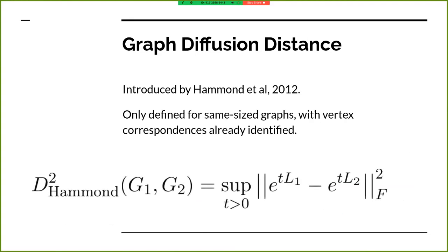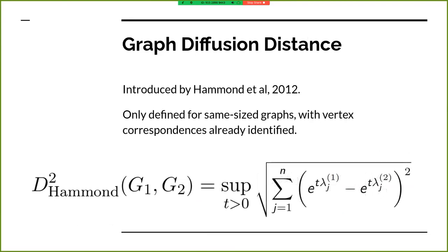GDD computes the distance between two graphs by looking at the maximum difference between their heat kernels as we sweep over a time parameter. This can be reduced to the norm between the two lists of eigenvalues of the two heat kernels.